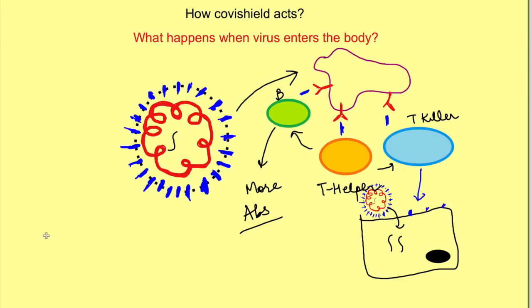So that is the mechanism of action of the vaccine Covishield. The background immune mechanisms of our body are activated due to the vaccine, and this helps us to effectively attack the virus which may enter our body at some future time.